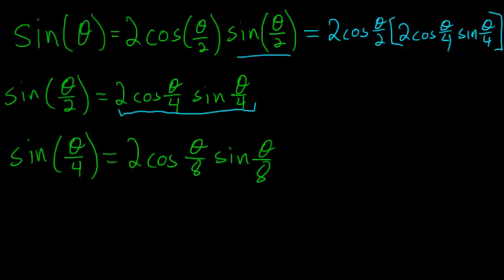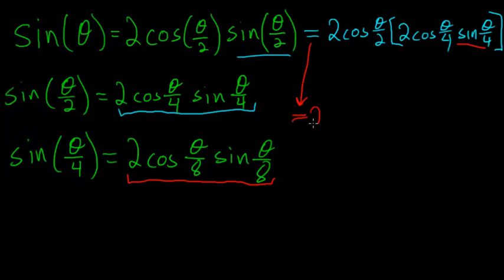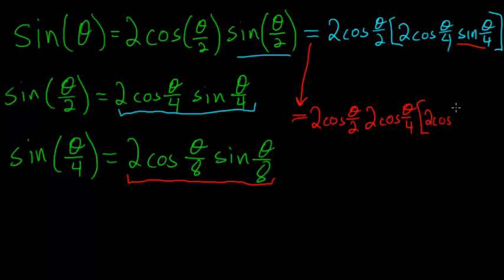Notice that in this equation we have the sine of theta over 4, which we solved for earlier. We can substitute that in as well. So the sine of theta is equal to twice the cosine of theta over 2 multiplied by twice the cosine of theta over 4, and all of this multiplied by twice the cosine of theta over 8 times the sine of theta over 8.